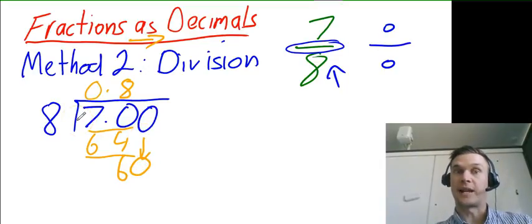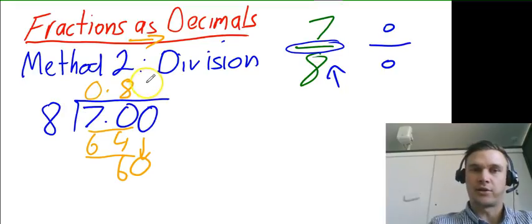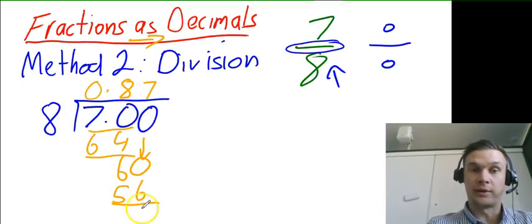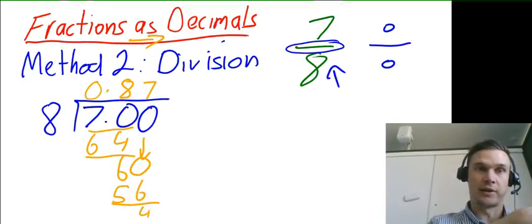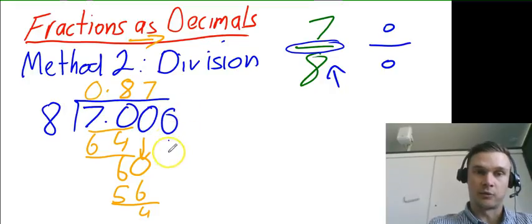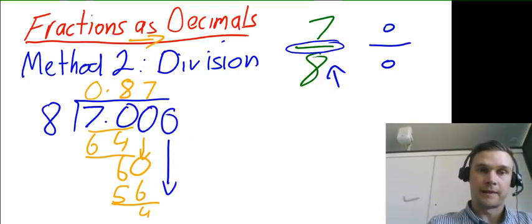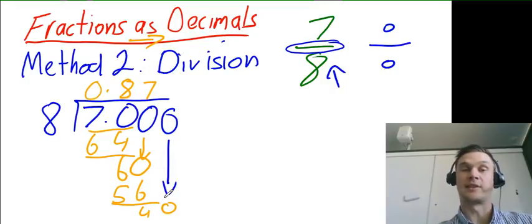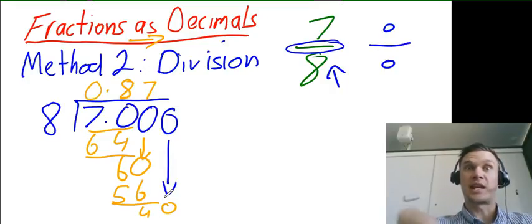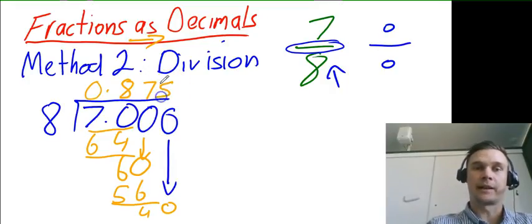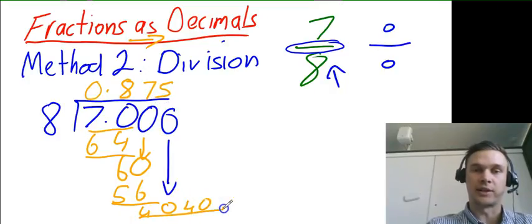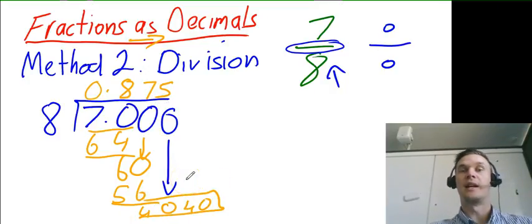How many times does 8 go into 60? It goes around 7 times, which makes 56, so we don't have to continue anymore. We can cross that off and there we go.